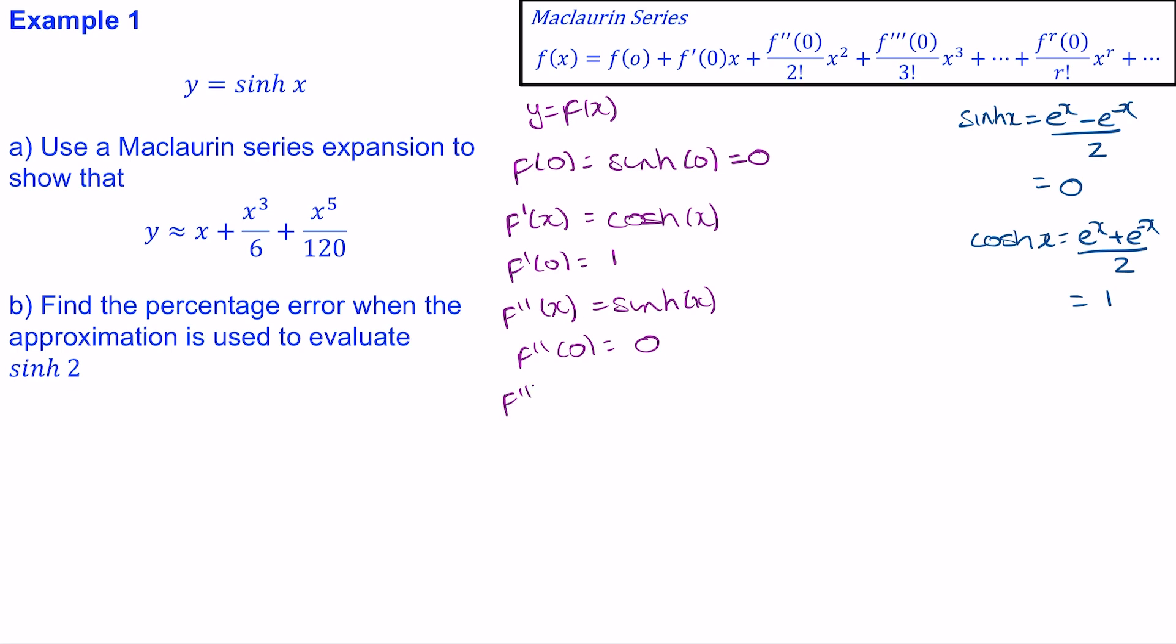The third derivative will be again differentiating the second derivative, which will give us cosh(x). And when x is 0 we get 1.